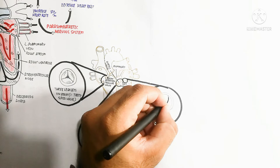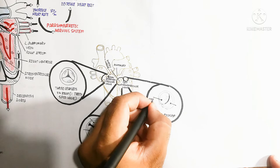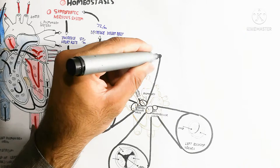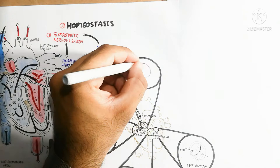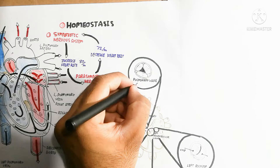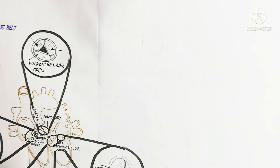Now let's understand systemic circulation and pulmonary circulation. Pulmonary circulation means the heart pumps blood to the lungs, while systemic circulation means the heart pumps blood to the tissues and body. The pulmonary valve also contains three leaflets and allows blood to move into the lungs. When the pulmonary valve is closed, backward movement of blood is impossible.